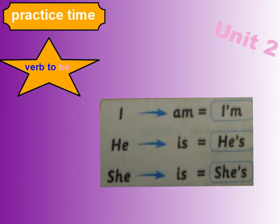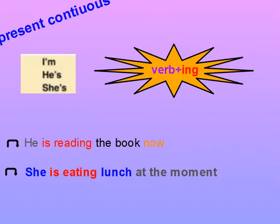Today we have the present continuous tense — Zaman El-Modora El-Mustamif. The form of the present continuous is: personal pronoun plus verb to be plus verb plus ing. We add ing to the verb, and before it we place verb to be — am, is.